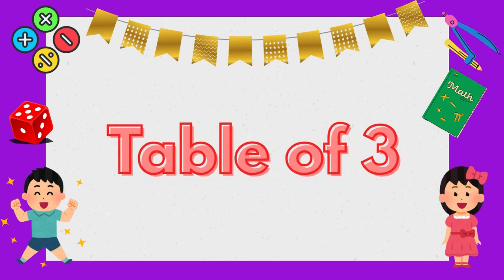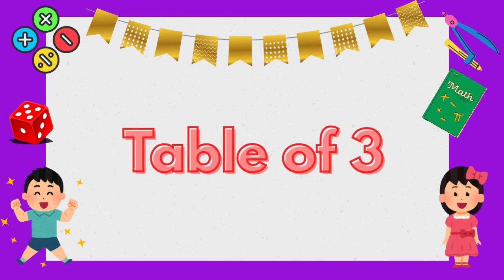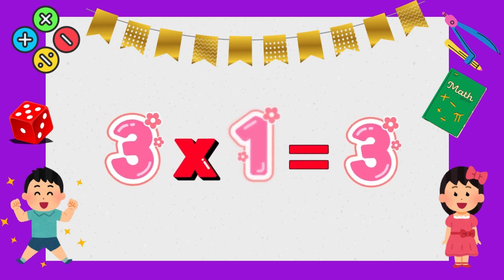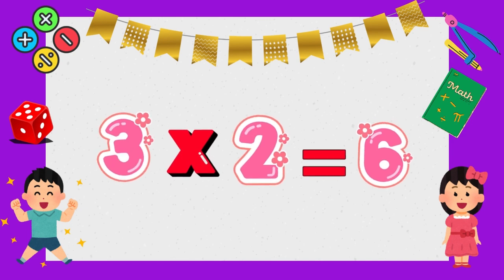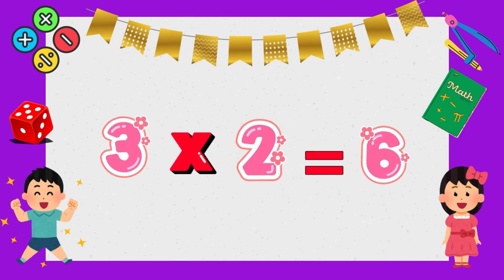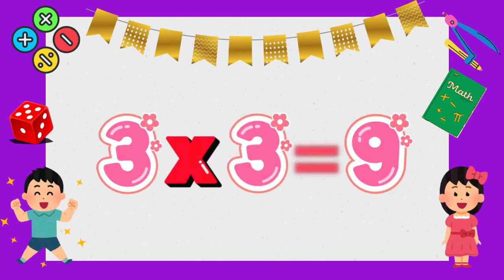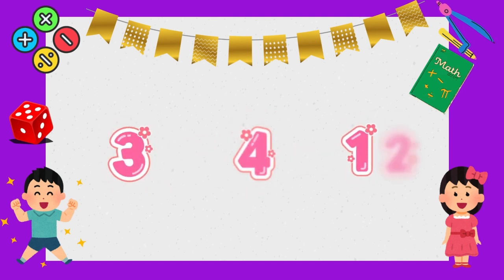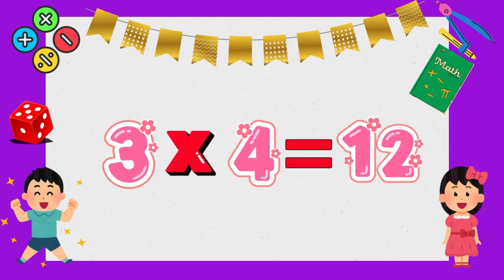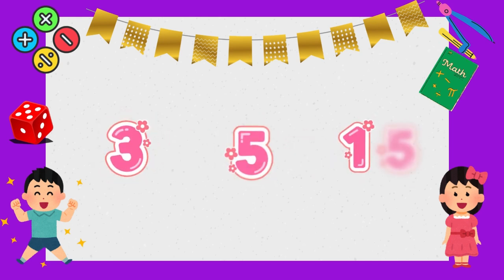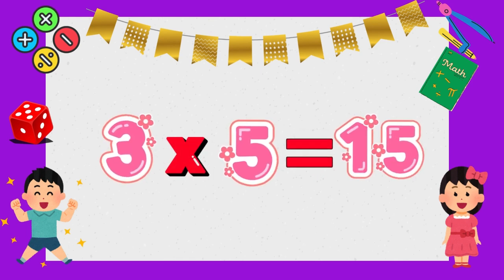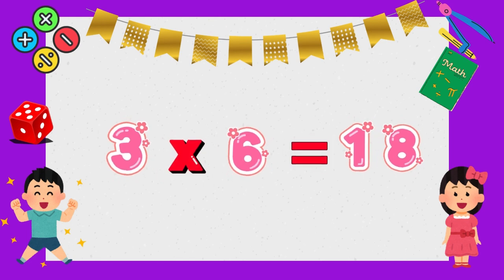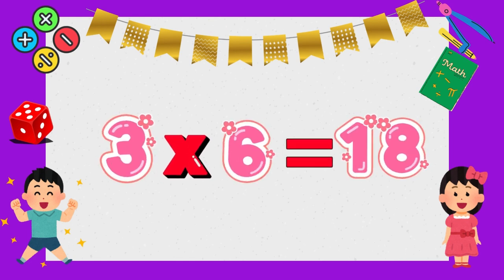Let's learn! Table of Three. 3 times 1 is 3. 3 times 2 is 6. 3 times 3 is 9. 3 times 4 is 12. 3 times 5 is 15. 3 times 6 is 18.